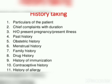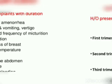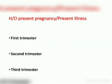History also covers contraceptive history and history of allergy. Chief complaints include: increased frequency of urination, constipation, heaviness of breasts, rise of temperature, edema, pain in abdomen, backache, and vaginal bleeding. History of present pregnancy is recorded across the first, second, and third trimesters.